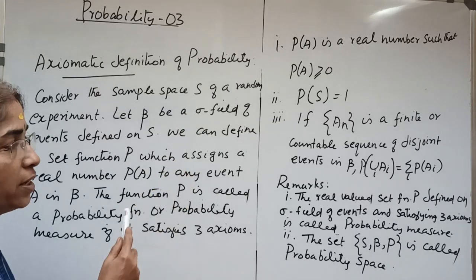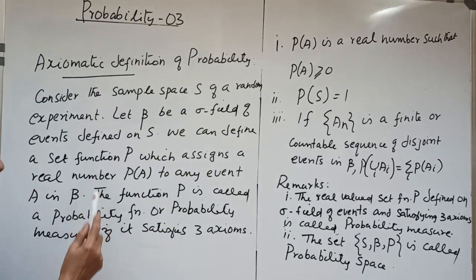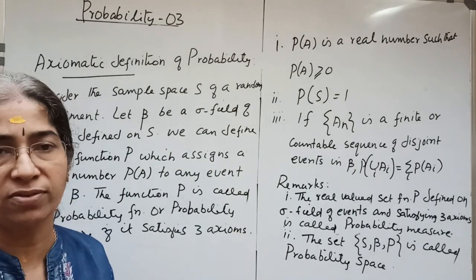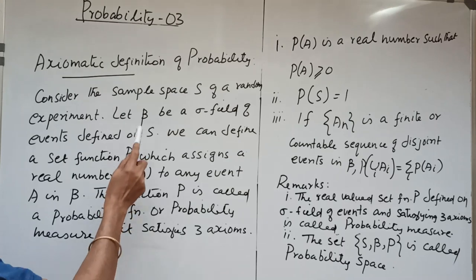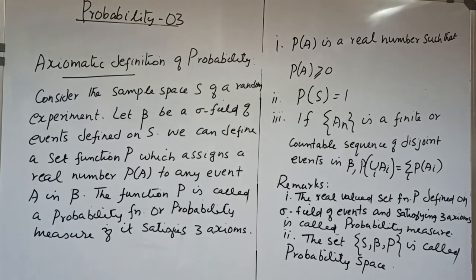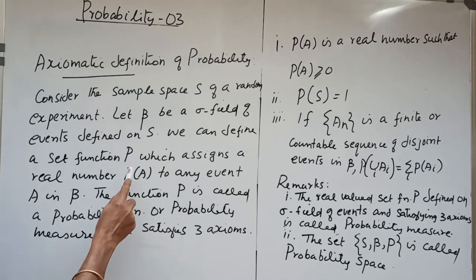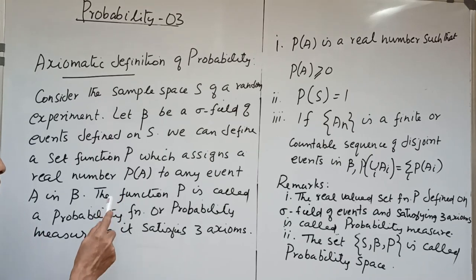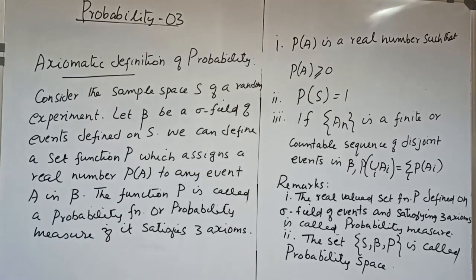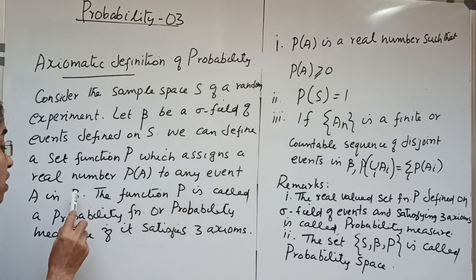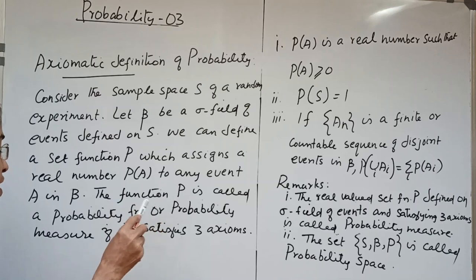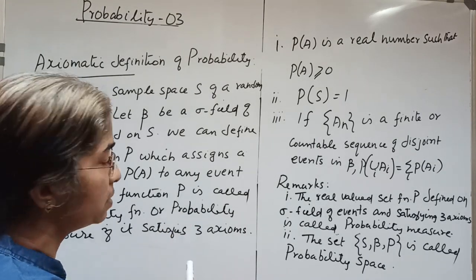Now we define a set function P. A set function is a function whose domain is a set of sets — here it is beta. Let beta be a sigma field of events defined on S. We define a set function P which assigns a real number P(A) to any event A in beta. The function P is called a probability function or probability measure if it satisfies three axioms.